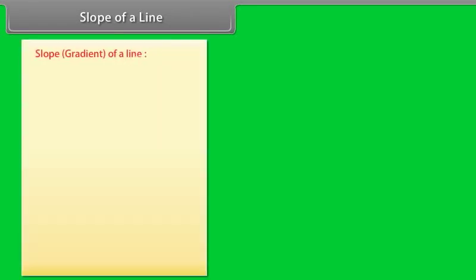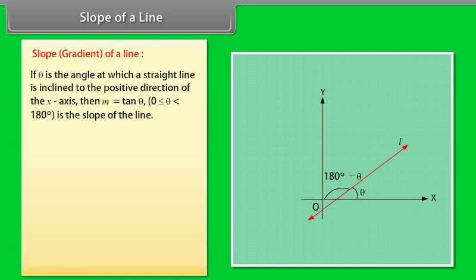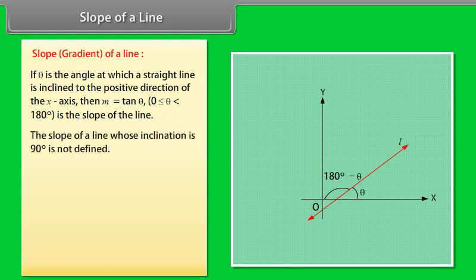Slope of a line. Slope or gradient of a line: If theta is the angle at which a straight line is inclined to the positive direction of the x-axis, then M equals tan(theta), where 0 is less than or equal to theta and less than 180 degrees, is the slope of the line. The slope of a line whose inclination is 90 degrees is not defined.